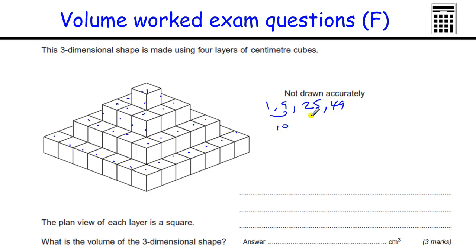One and nine makes 10. 10 and 25 is 35. 35 plus 49. This is calculator based but I like to do things in my head. So that's 70, 84. And they're centimeters cubed because they are cubes.